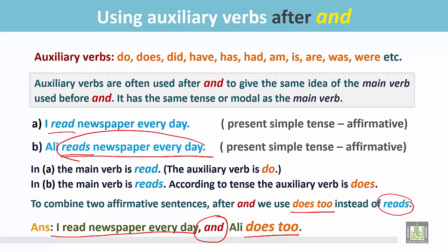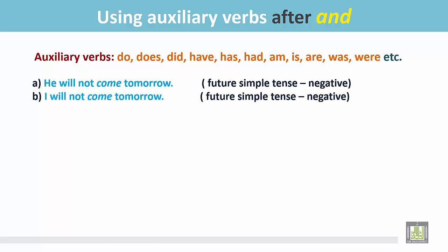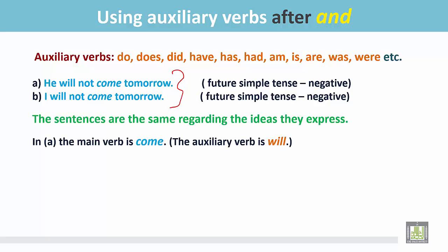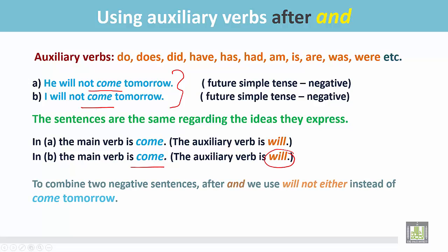There are two more examples. 'He will not come tomorrow' and 'I will not come tomorrow.' Both sentences are in the future form and in the negative form — they express the same idea. In sentence A, the main verb is 'come' and the auxiliary verb is 'will.' In sentence B, the main verb is also 'come' and the auxiliary verb is 'will.'